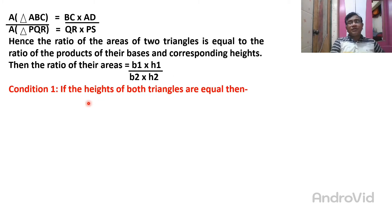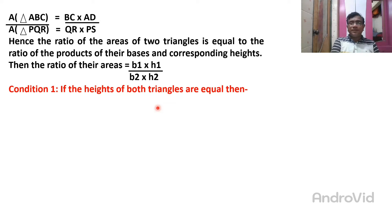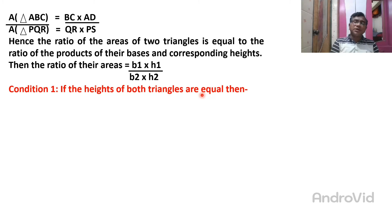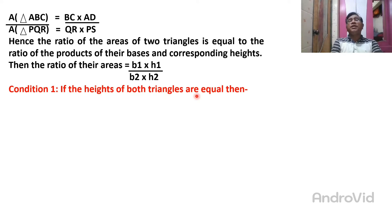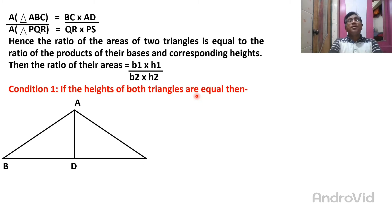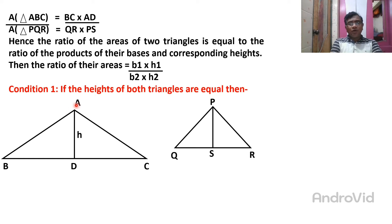Second condition: if the height of both triangles are equal — when you draw two triangles and the height of both triangles are equal — then area depends on base. Remember, students, this is very simple: if height is equal then area depends on base; if base is equal then area depends on height. So if the height of both triangles are equal, then area of the triangle depends on base.